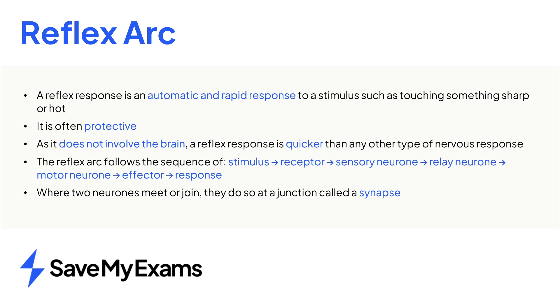In summary, a reflex response is an automatic, rapid and protective response to a stimulus, which does not need to involve the brain as a coordinator. The reflex arc follows a sequence of stimulus, receptor, sensory neuron, relay neuron, motor neuron, effector, followed by a response. The gap between two neurons is called a synapse, and signals are transmitted across the synapse following the diffusion of chemicals called neurotransmitters.